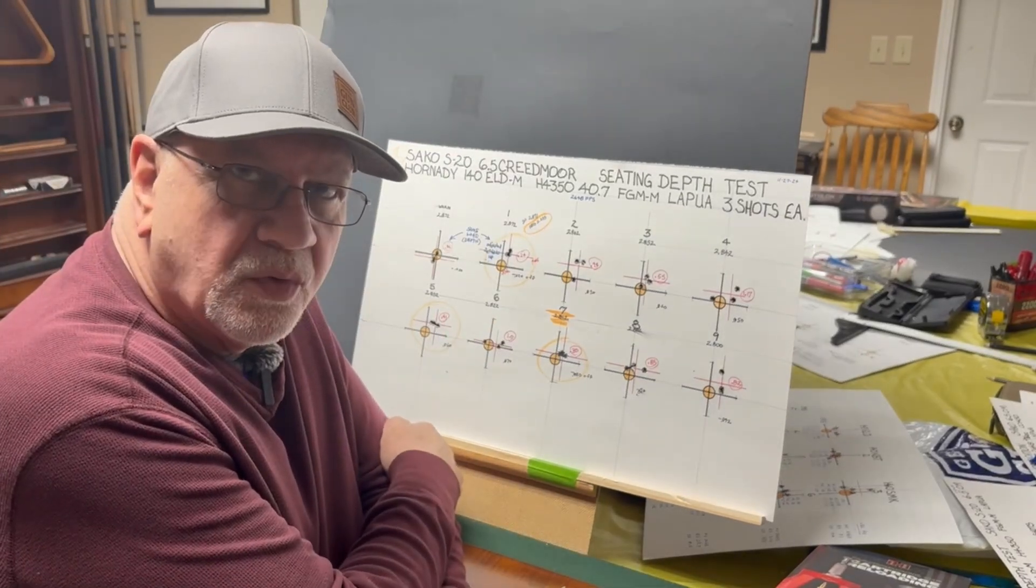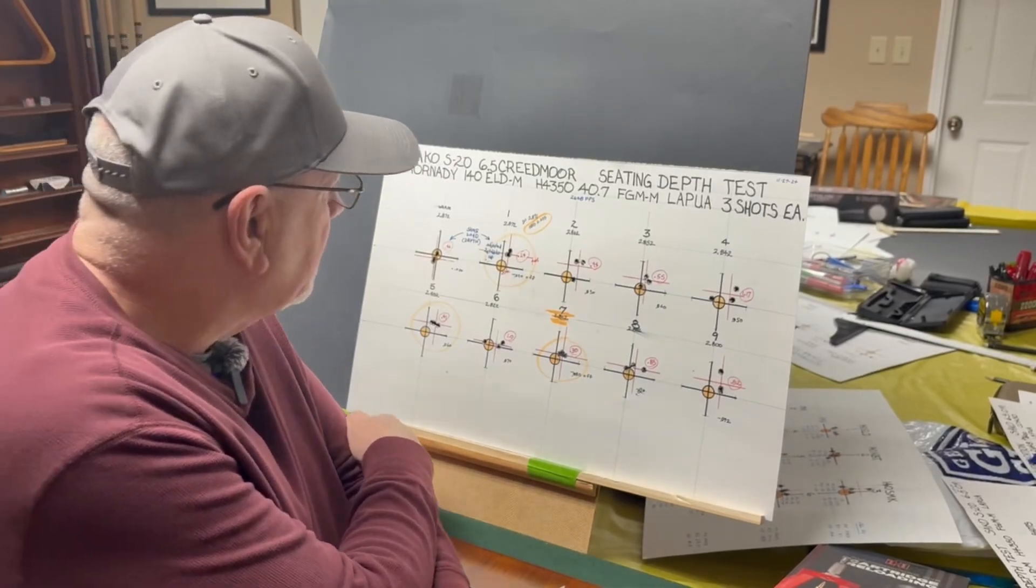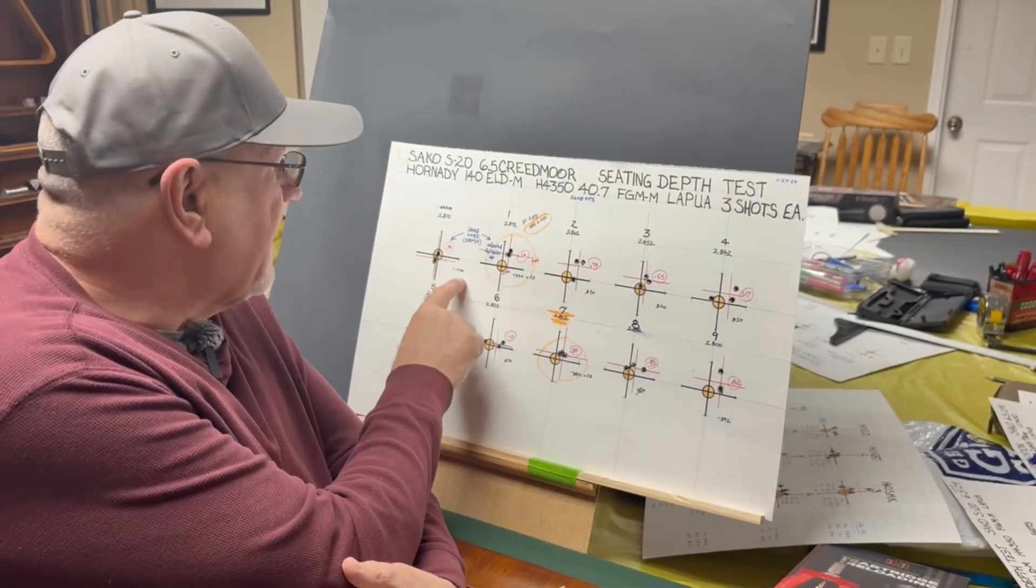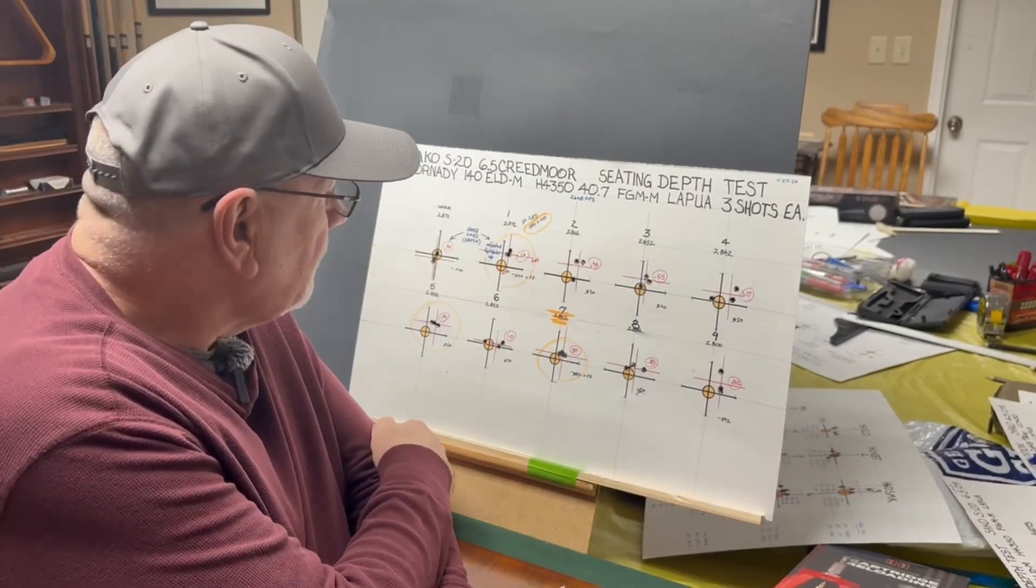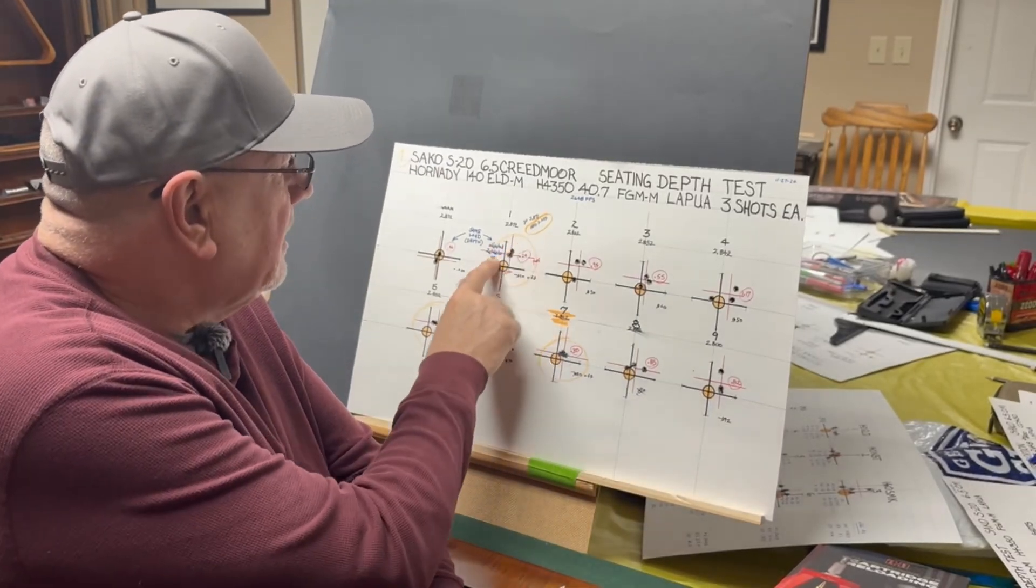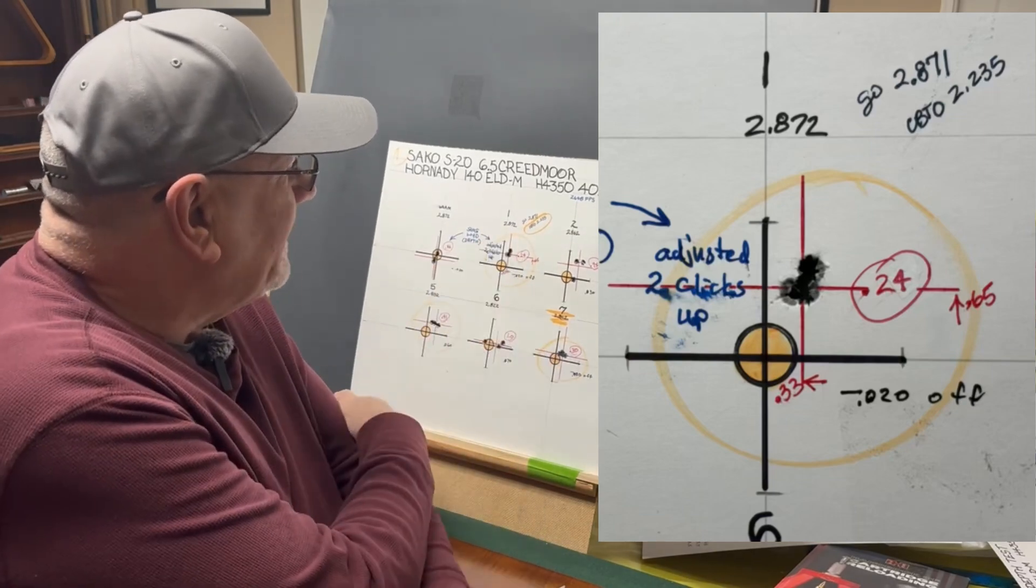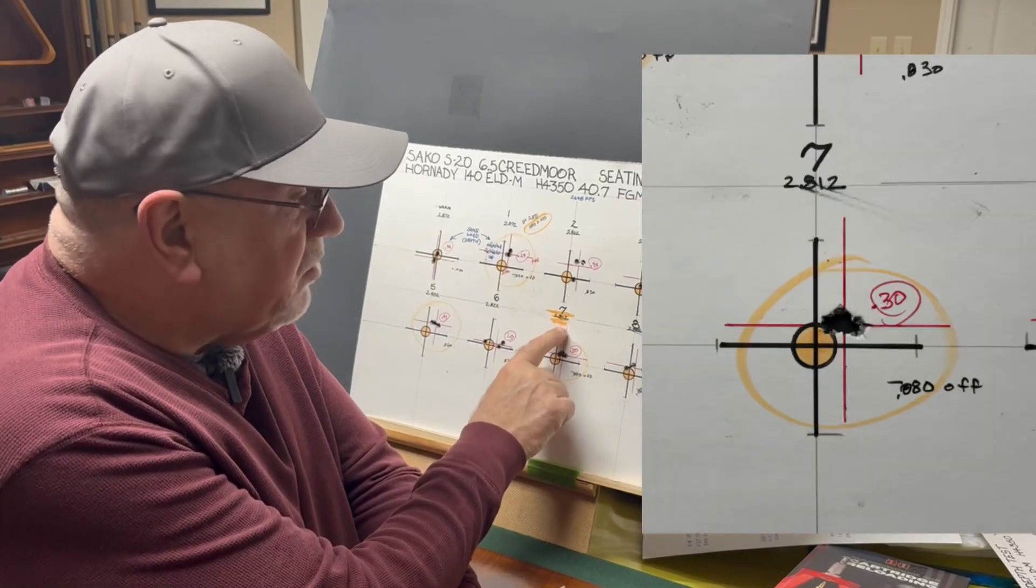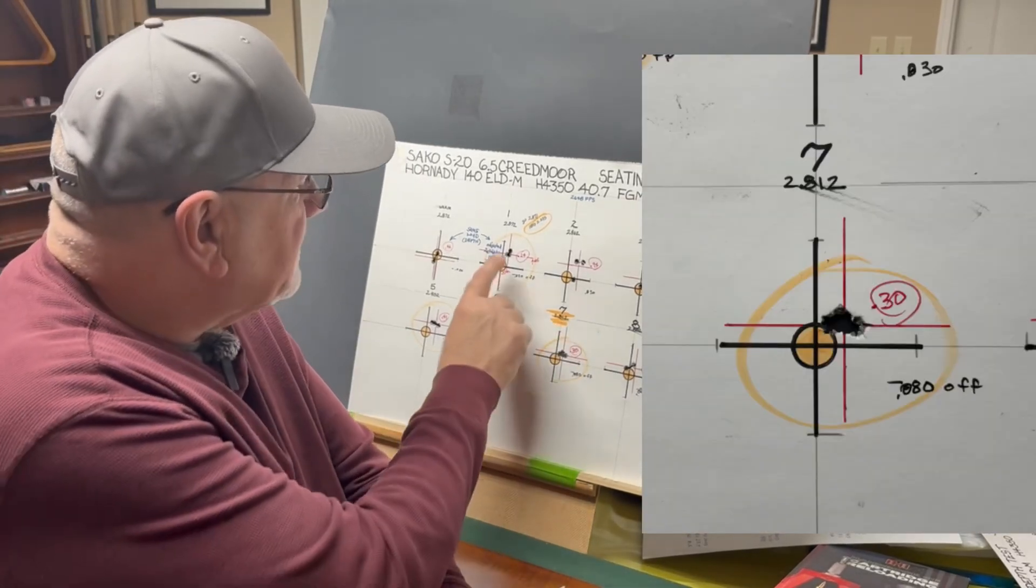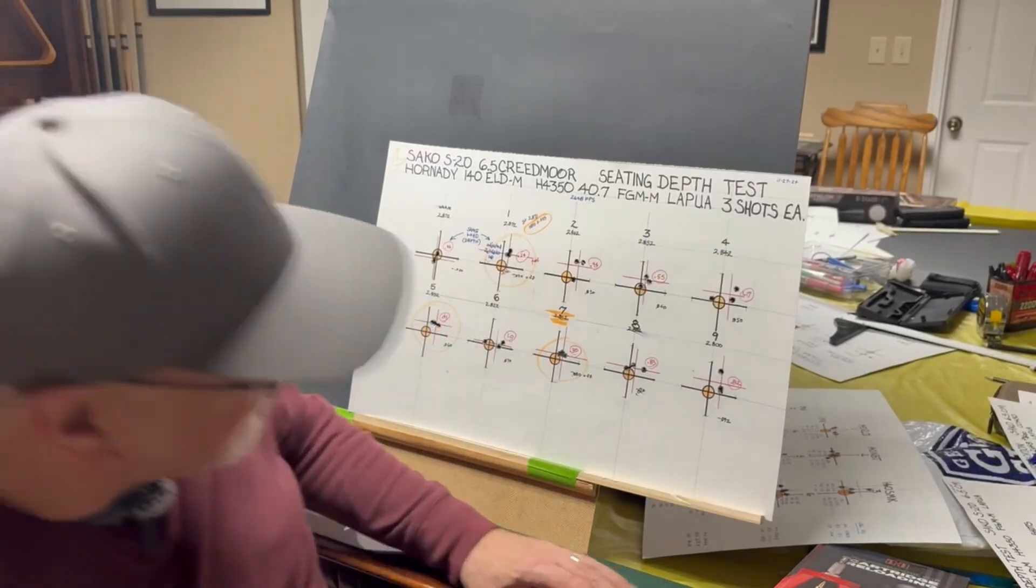I was shooting that same powder H4350 at 40.7 grains with the Hornady ELD match. I started off at 20 thousandths off of the lands and I went to 90 thousandths. I found a node here that looked pretty good with an overall length of 2.872 and there was another one down here at a length of 2.812. So, I decided to go test this one at 2.872 to see how that performed.